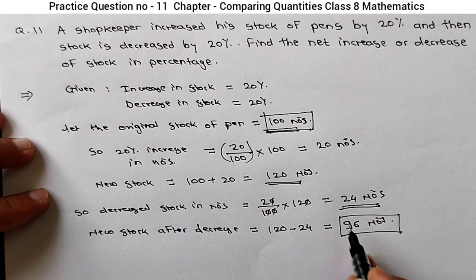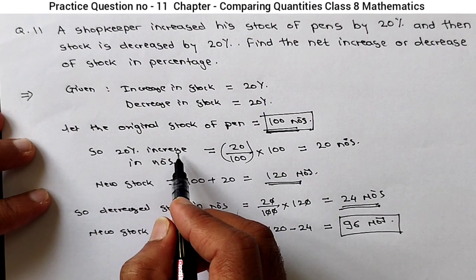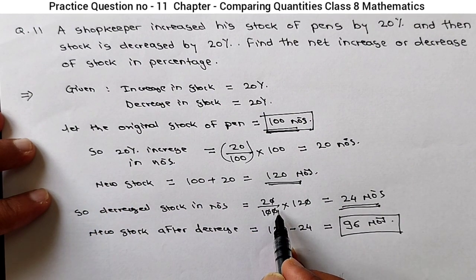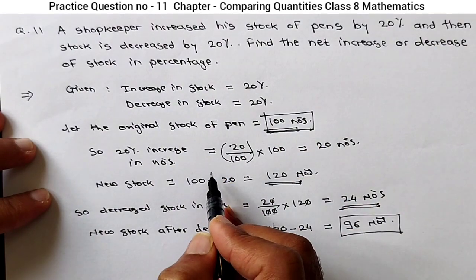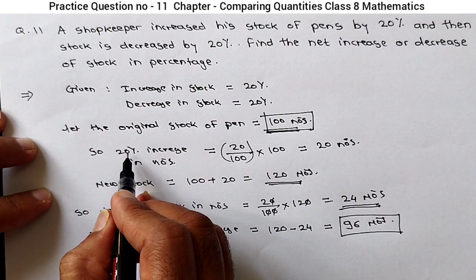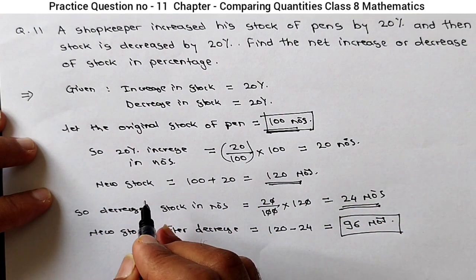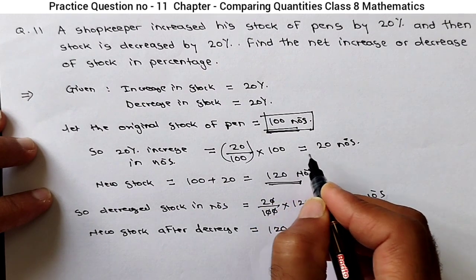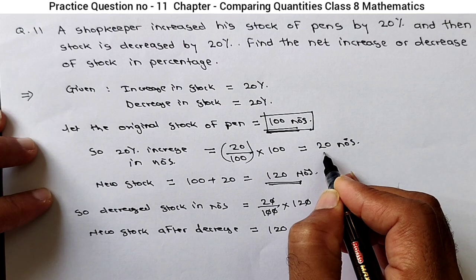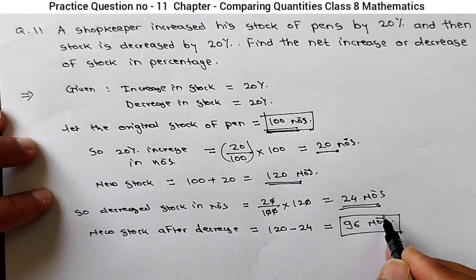You can observe there is a decrease in stock, even though it was increased by 20% and decreased by 20%. Though the percentages are the same, the base value is different. Base value for increase is 100, and base value for decrease is 120. That's why in numbers, the increase is 20 but the decrease is 24 — so there is an overall decrease.